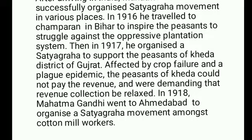After arriving in India, Mahatma Gandhi successfully organized Satyagraha movements in various places. In 1916, he traveled to Champaran in Bihar to inspire the peasants to struggle against the oppressive plantation system. Then in 1917, he organized a Satyagraha to support the peasants of Kheda district of Gujarat. Affected by crop failure and a plague epidemic, the peasants of Kheda could not pay the revenue and were demanding that revenue collection be relaxed. In 1918, Mahatma Gandhi went to Ahmedabad to organize a Satyagraha movement amongst the cotton mill workers.